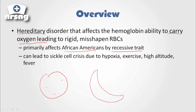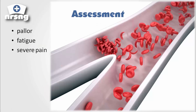Our major concern with patients who have sickle cell disease is a sickle cell crisis. This can be triggered by hypoxia, exercise, high altitude, and fever. These conditions can lead to what's called a sickle cell crisis, which causes an exacerbation of the symptoms of sickle cell disease.